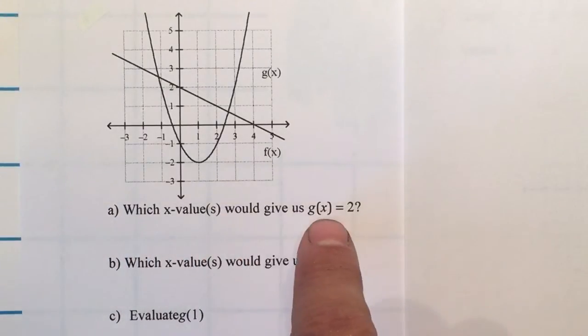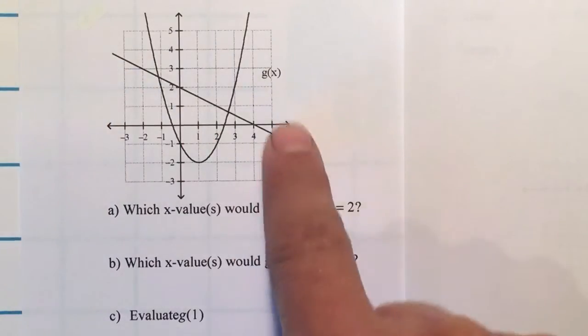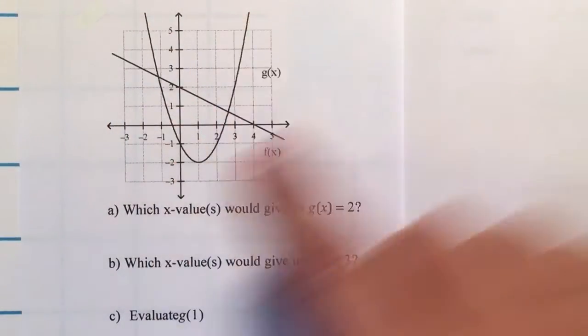Which x values will give us g of x equal to 2? If you notice they are giving us two functions. They give you f of x which is the line and g of x which is the parabola facing up.